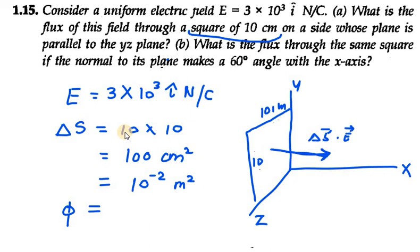So phi will be E cap dot ΔS cap. E cap is 3×10³ and ΔS is 10⁻².